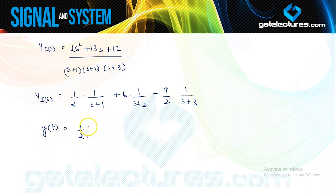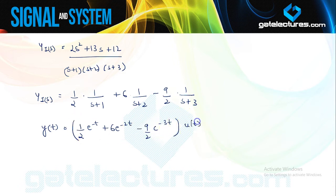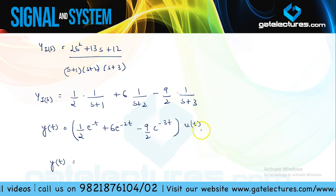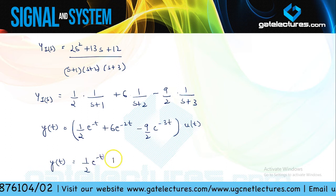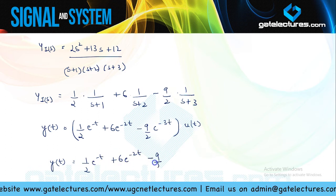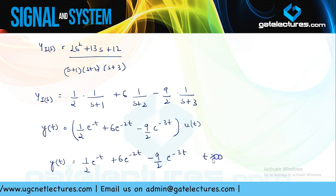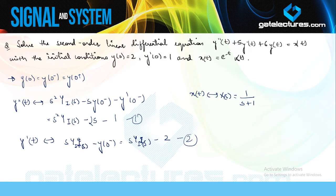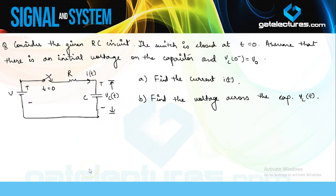Taking the inverse Laplace, y(t) = (1/2)·e^(−t) + 6·e^(−2t) − (9/2)·e^(−3t), multiplied by u(t). Since we assumed y(0−) = y(0+), we can write this as valid for all t ≥ 0. This is how you solve a differential equation using unilateral Laplace transform.